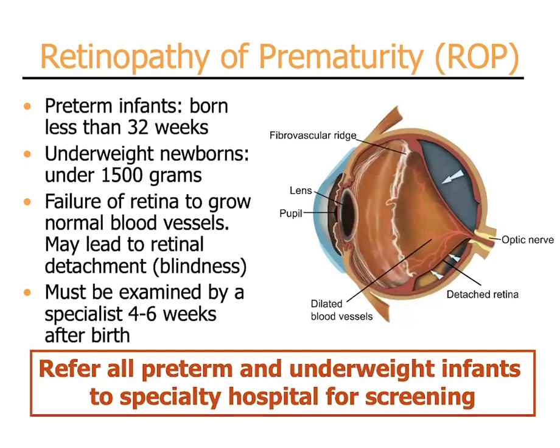Retinopathy of prematurity is an increasing problem all around the world. It largely affects preterm infants — those born less than 32 weeks of gestational age. Keep in mind that a normal pregnancy is 40 weeks gestational age. It is more likely to occur in low birth weight newborns, those less than 1,500 grams, and also in those infants who require supplemental oxygen.